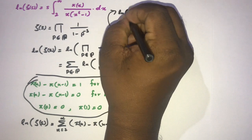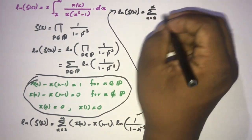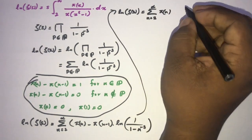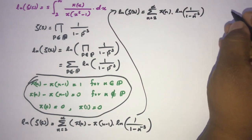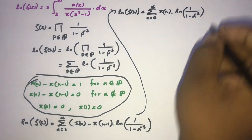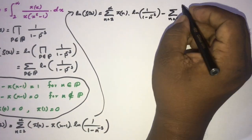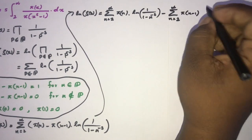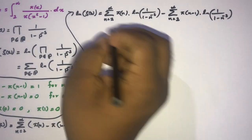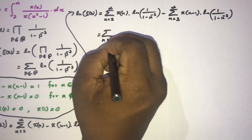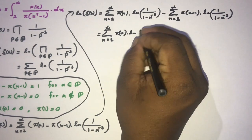Natural log of zeta of s equals the sum from n equals 2 to infinity of pi(n) times natural log of 1 over 1 minus n to the minus s, minus the sum of pi(n-1) times natural log of 1 over 1 minus n to the minus s. We rewrite this as the sum from n equals 2 to infinity of pi(n) times natural log of 1 over 1 minus n to the minus s.